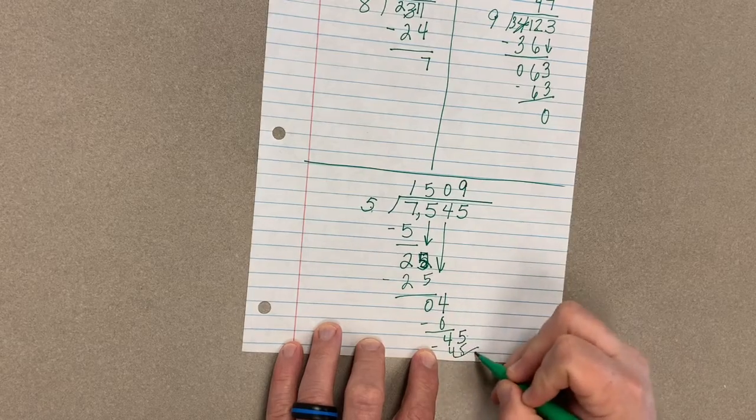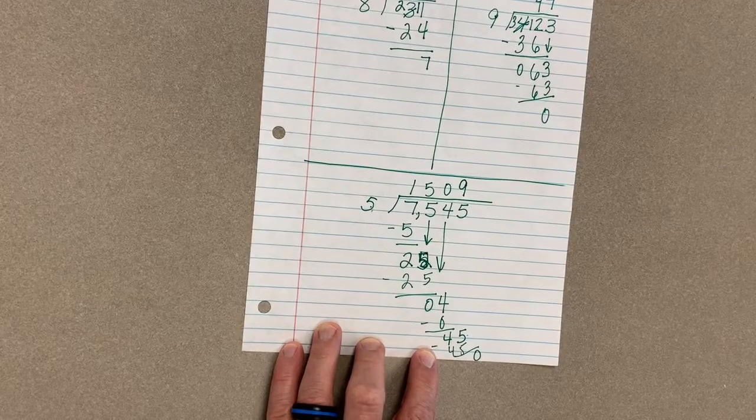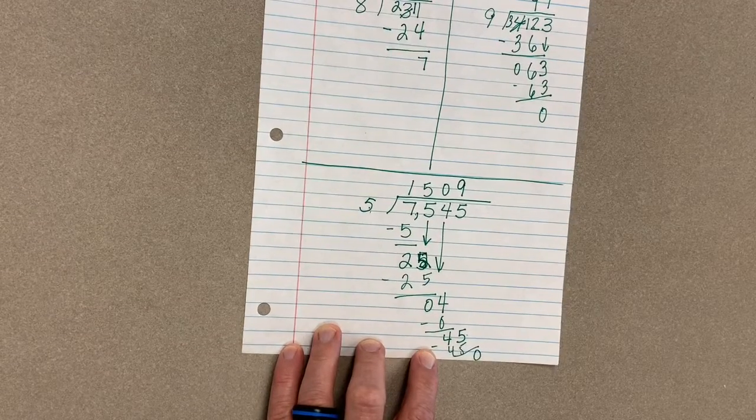And again, I will have a remainder of 0. I've got this goes in equally 1,509 times. All right, that's it for your guided practice.